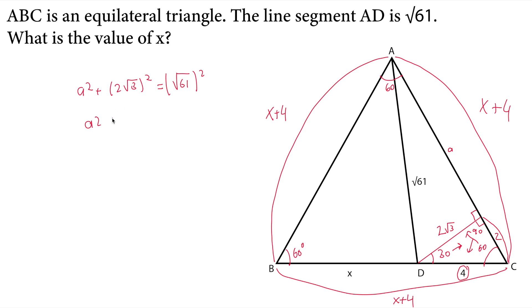So apply the powers here. We will get a square plus 12 equals 61. Subtract 12 from both sides. A square is 49 and apply square root operator and a will be 7.